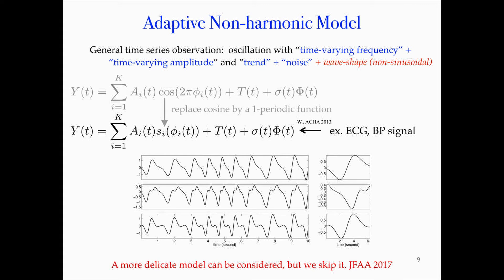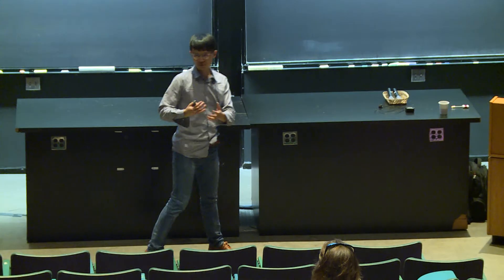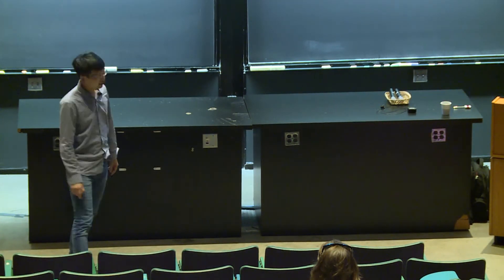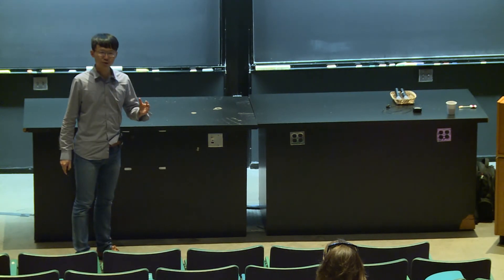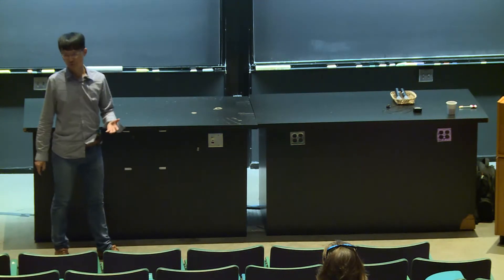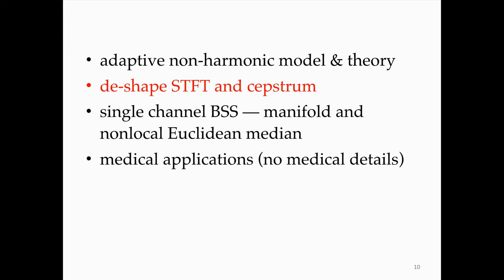The algorithm we propose is called the D-shape short-time Fourier transform, which can be viewed as a nonlinear version of the widely applied short-time Fourier transform, also known as Gabor transform or windowed Fourier transform. Some engineering terminology called cepstrum also comes into play. If you ever learned digital signal processing up to the last chapter, you may have seen this cepstrum concept. The question is how to combine these two things.